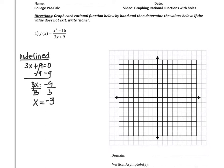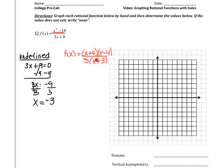Now we have to determine if that undefined value is a vertical asymptote or if it's a hole. So what we're going to do next is simplify. So f of x equals — the numerator, x squared minus 16, can be broken up into (x plus 4)(x minus 4). And the denominator, I could take out a GCF of 3 and I'm left with x plus 3. As you can see, this can't be simplified anymore and there's nothing that can be crossed off. So that means this undefined value is going to be my vertical asymptote.